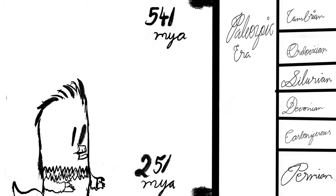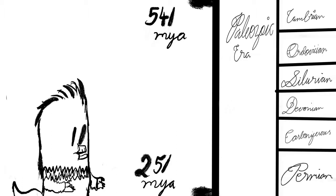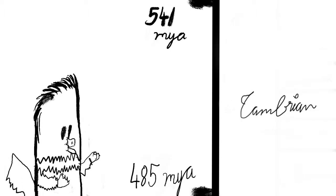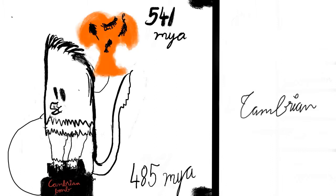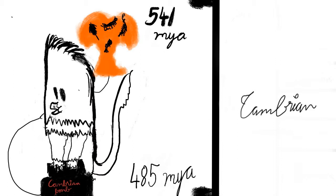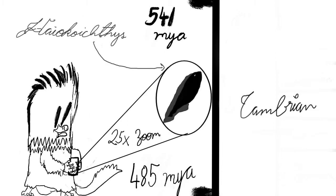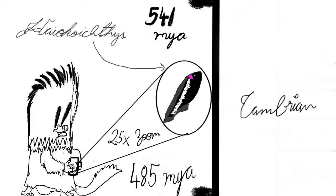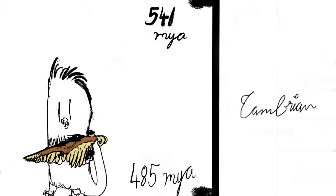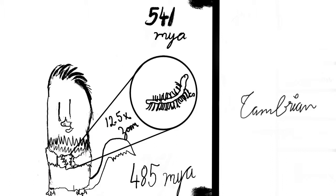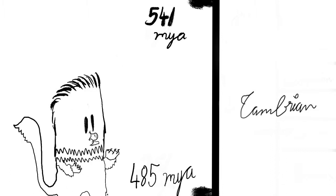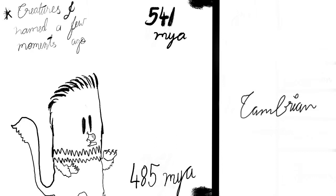The Paleozoic has six periods. The first one is the Cambrian, known for the Cambrian explosion — the rapid diversification of life. The first vertebrate, named Haikouichthys, appeared, which had characteristics like a backbone. Trilobites, anomalocaris, and hallucigenia were some creatures from this period. But by far the most common life forms in the Cambrian were the arthropods.